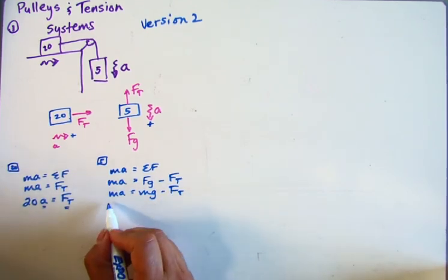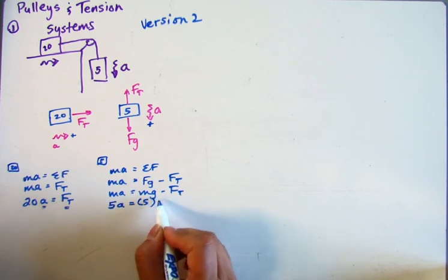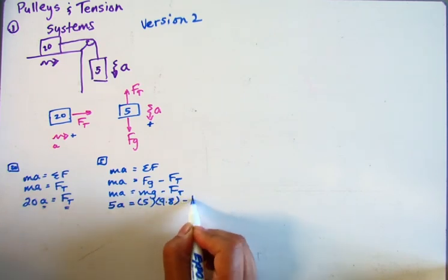So Ma equals Mg minus Ft. And then we can say that, since we're looking at the 5 kilogram mass, it's 5A equals 5 times 9.8 minus Ft.